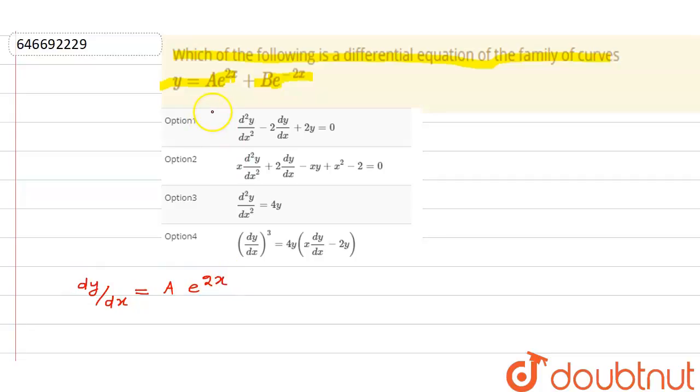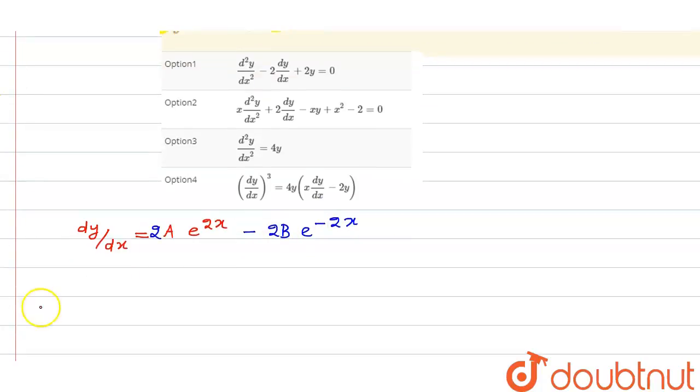And then differentiation of 2, that is 2x is 2. And here we have b e to the power minus 2x, so that is 2b e to the power minus 2x. Again what to do, again differentiate, so this is d²y upon dx².